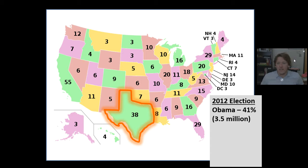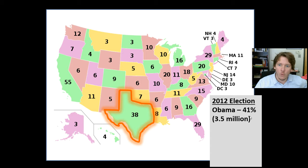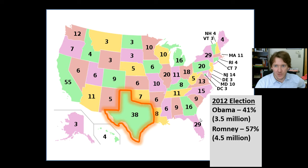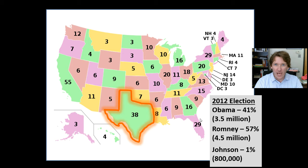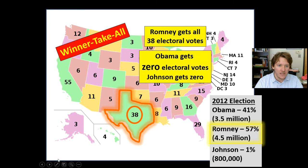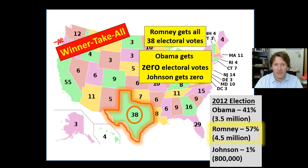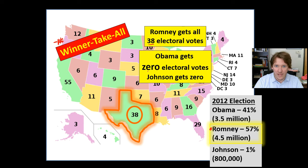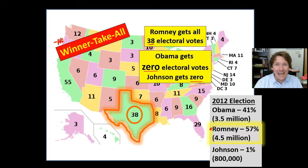Let's look at the Texas election in 2012. Obama received 41% of the vote in Texas — 3.5 million votes. Romney received 57% — 4.5 million votes — the majority. Johnson received 1% — about 800,000 votes. The way the Electoral College works on a state-by-state basis, we have a winner-take-all system. If you get the most votes — Romney got the most — he gets all the points. Obama gets zero points. Johnson gets zero points. Obama had 3.5 million people say they want him, but it's winner-take-all. If you don't get the most, you get none.